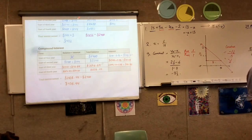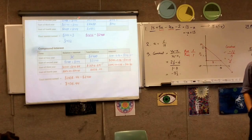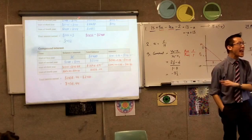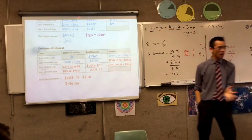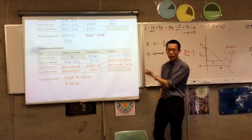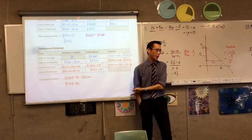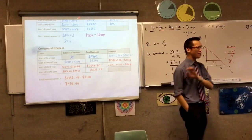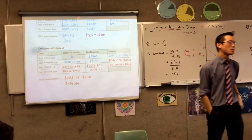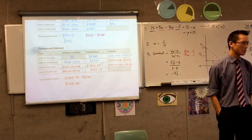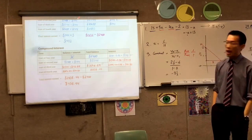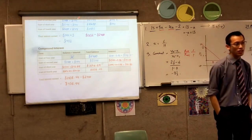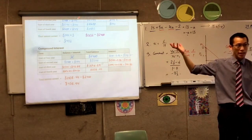In the real world, on any bank account, they're always going to compound for you. Simple interest comes out in a vanishingly small number of cases. However, it still does actually come out because it's simpler to calculate.